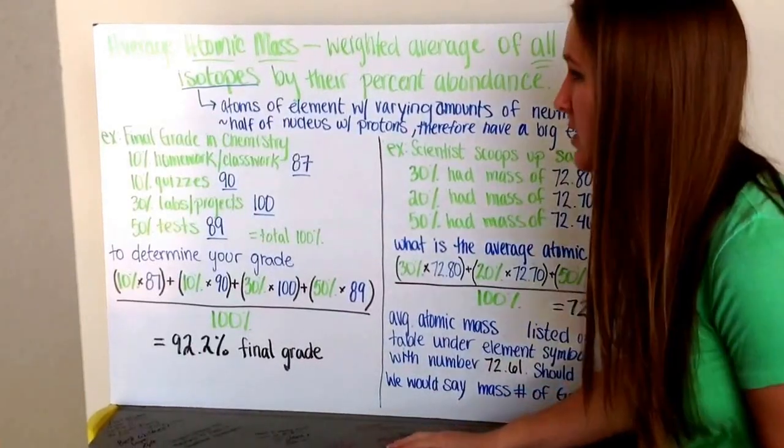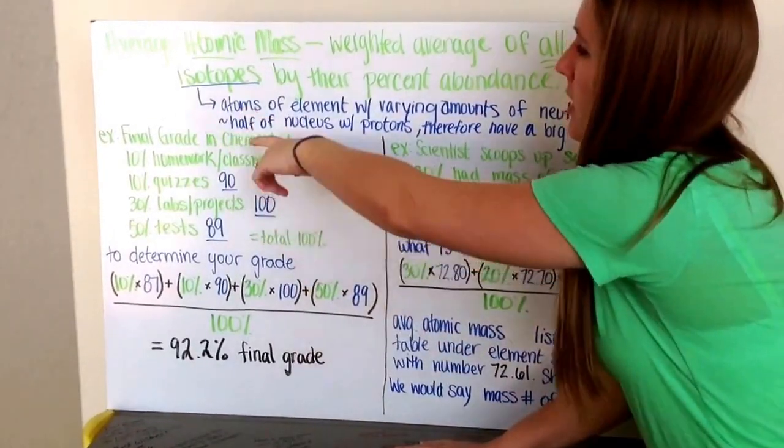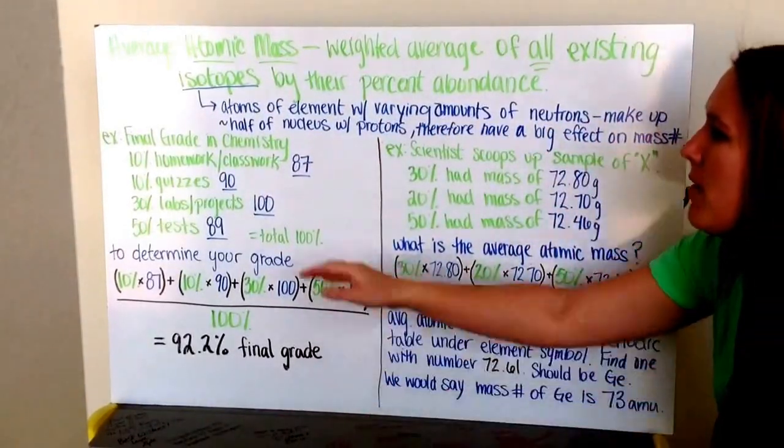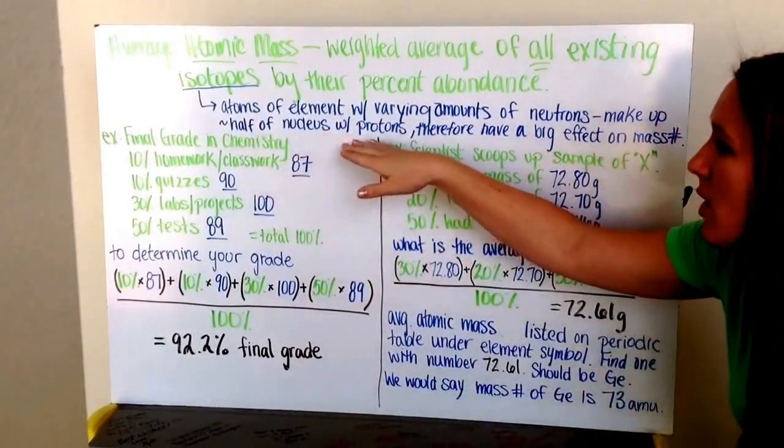An isotope is atoms of an element with varying amounts of neutrons. They make up about half of the nucleus with the protons.